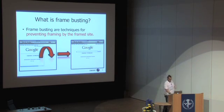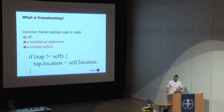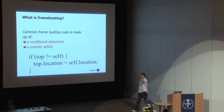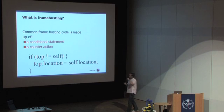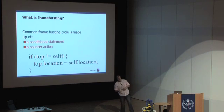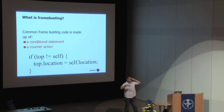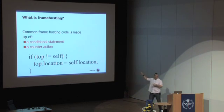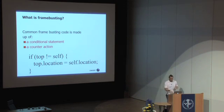We'll look at code. This is what pretty normal frame busting code looks like. It's a conditional statement and a counter action. We check if we are top — if we're not top, we want to become top. There are several ways of doing this; this is a pretty common little snippet that does it.